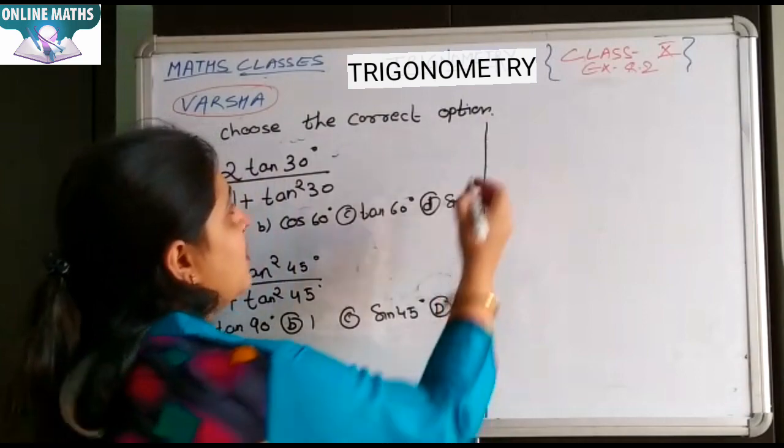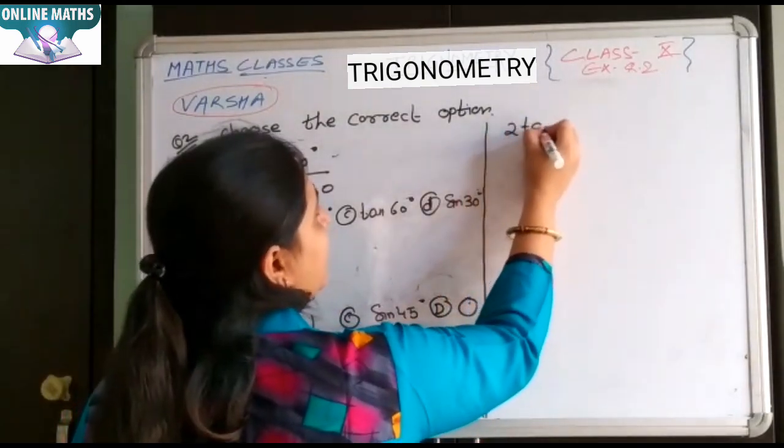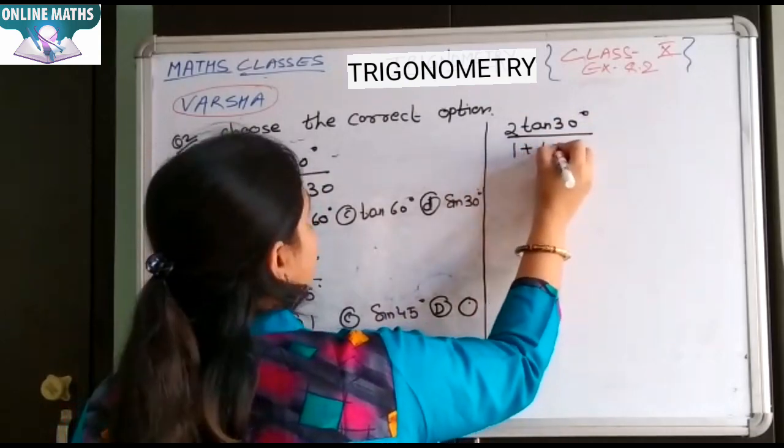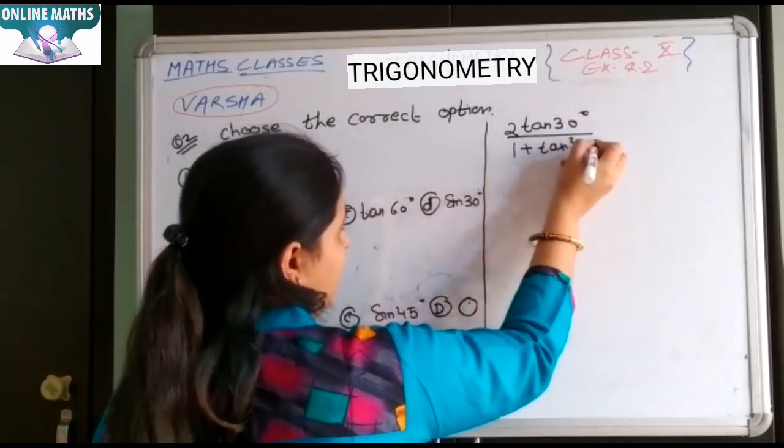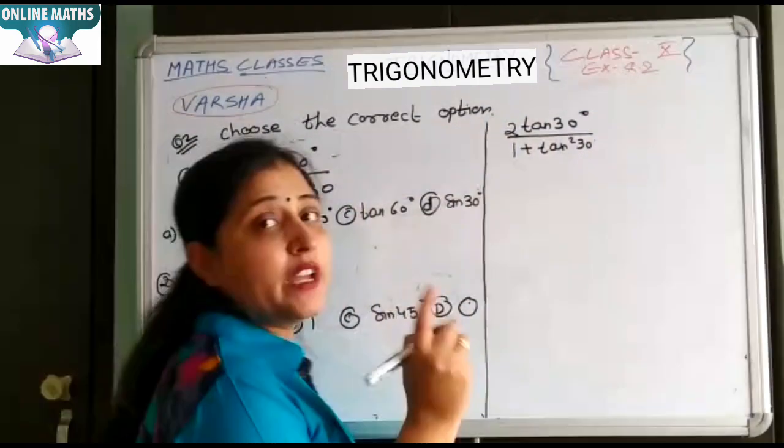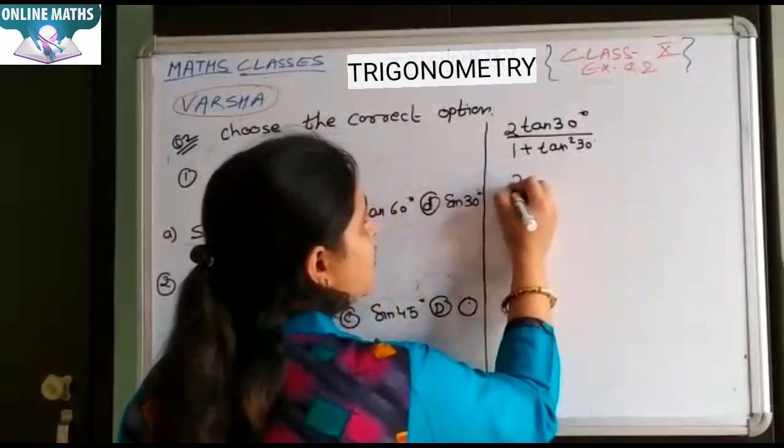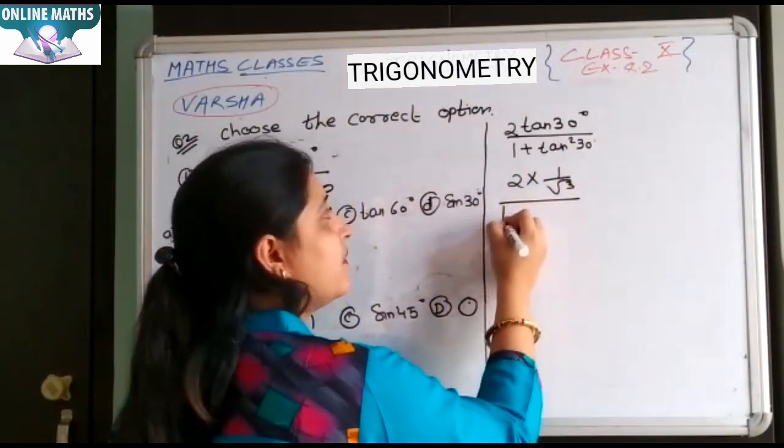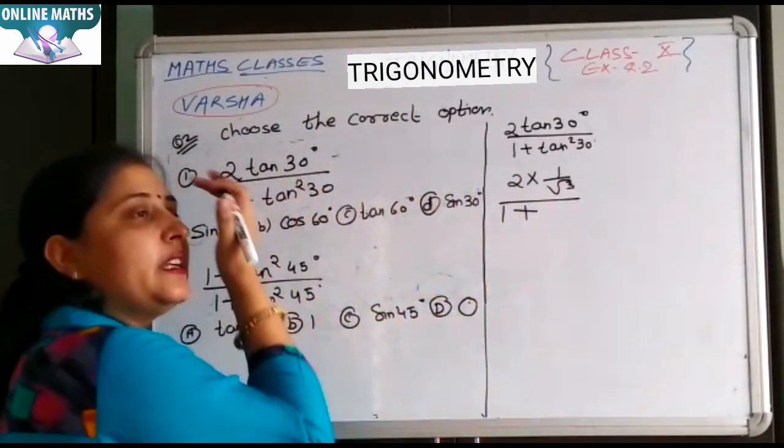First: 2 tan 30° upon 1 plus tan² 30°. Tan 30° ki value kya hai? 1 upon root 3. So 2 into 1 upon root 3 upon 1 plus tan² 30°.